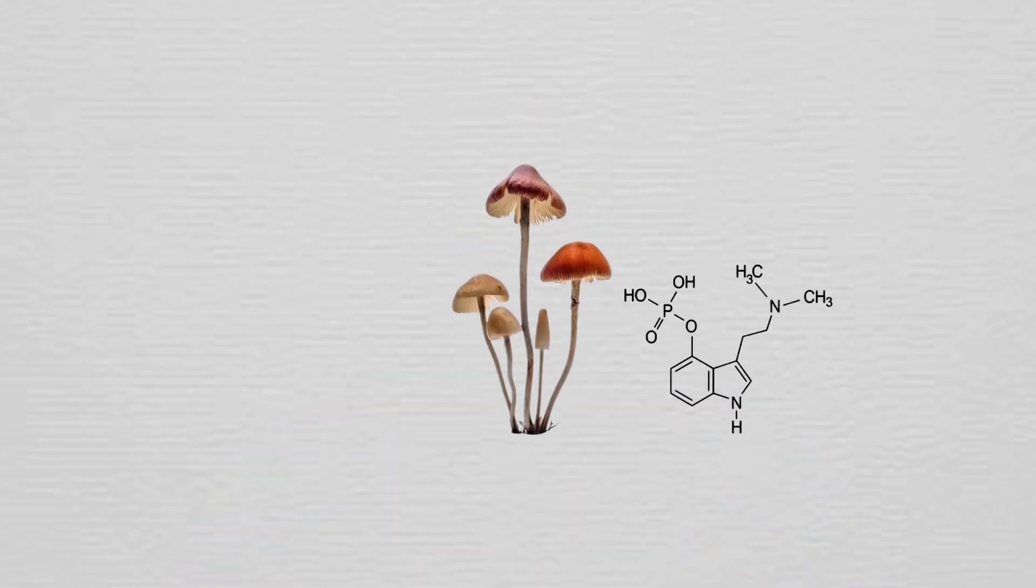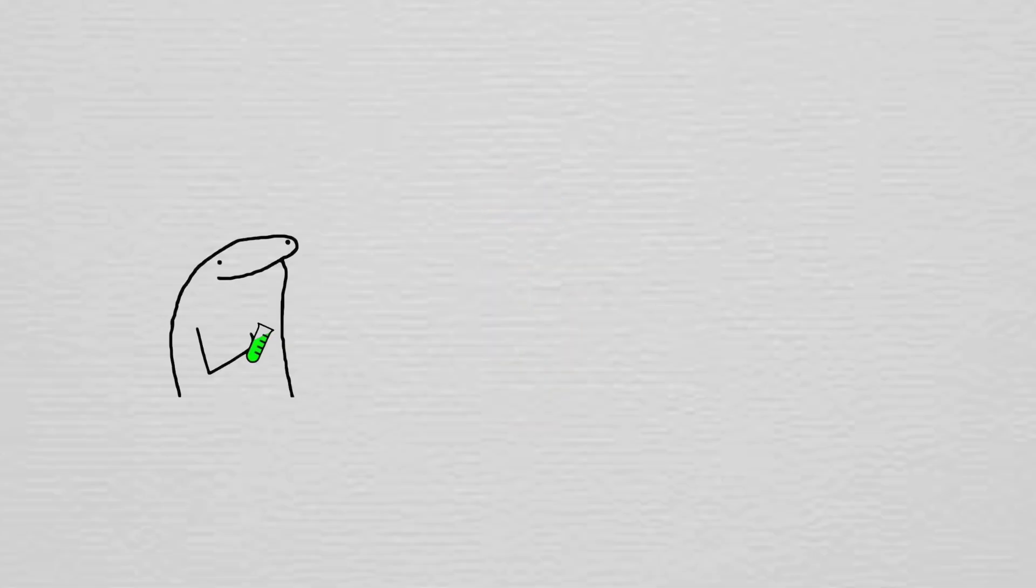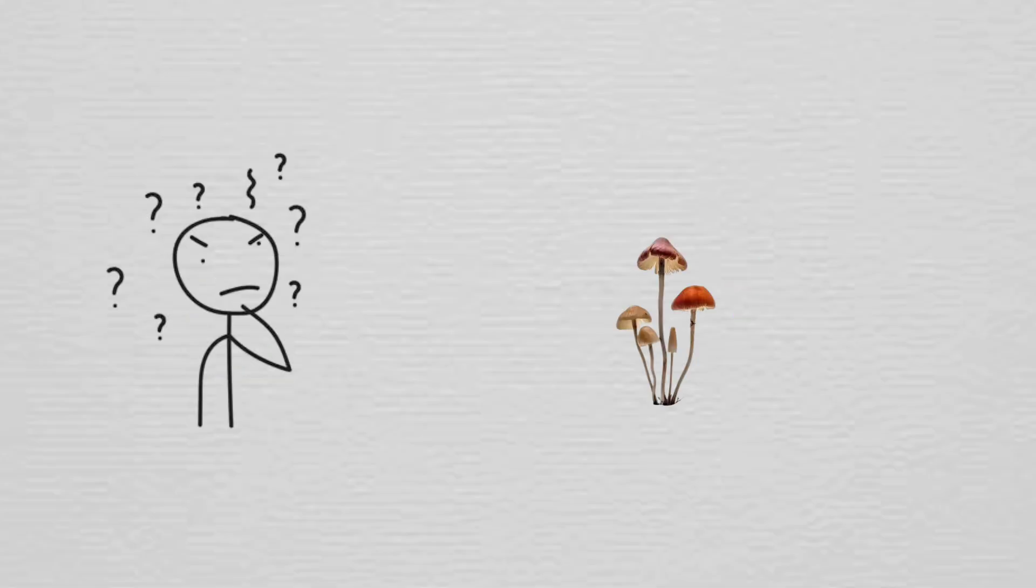These shrooms contain a chemical, the magic ingredient that messes with your brain. It's made through a bunch of chemical steps, basically turning a normal amino acid into psilocybin. Scientists aren't exactly sure why shrooms even have psilocybin, but it's probably to keep bugs from eating them, or just some random evolutionary accident.